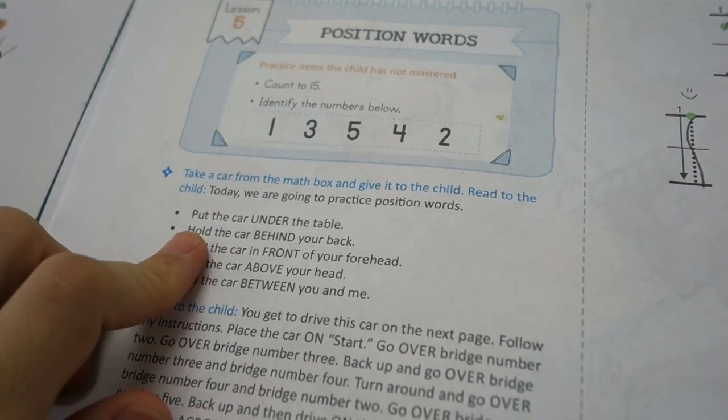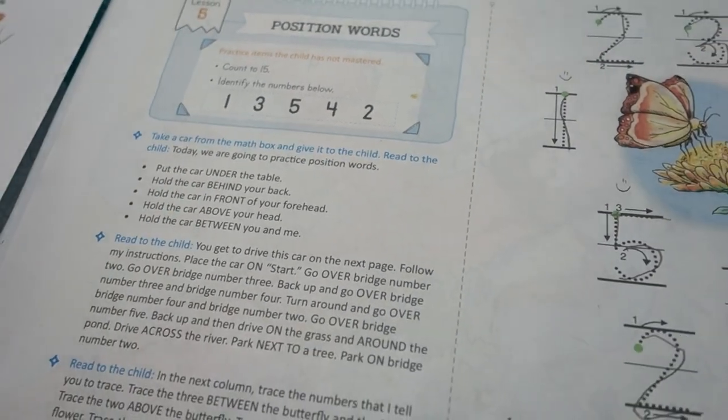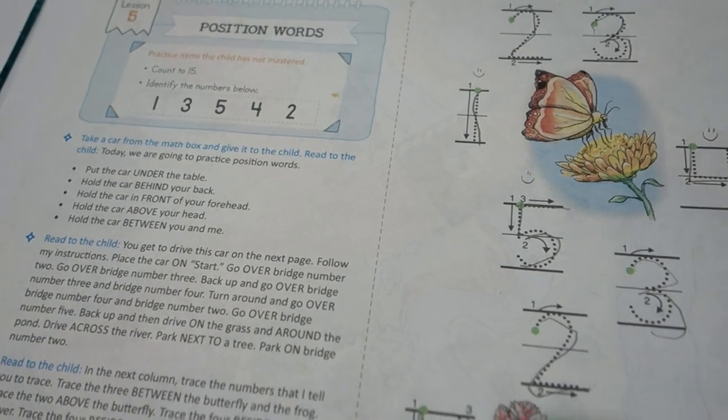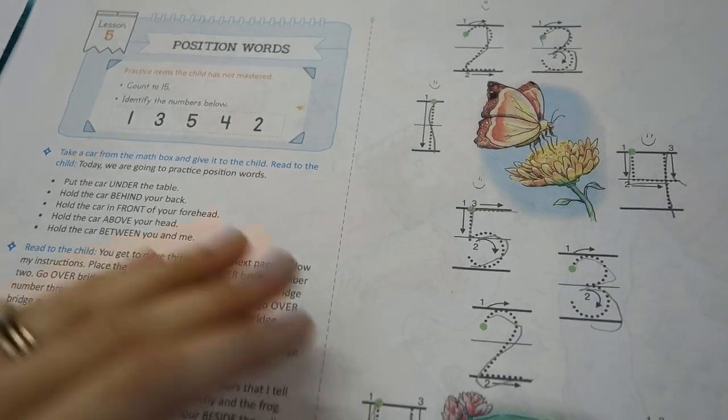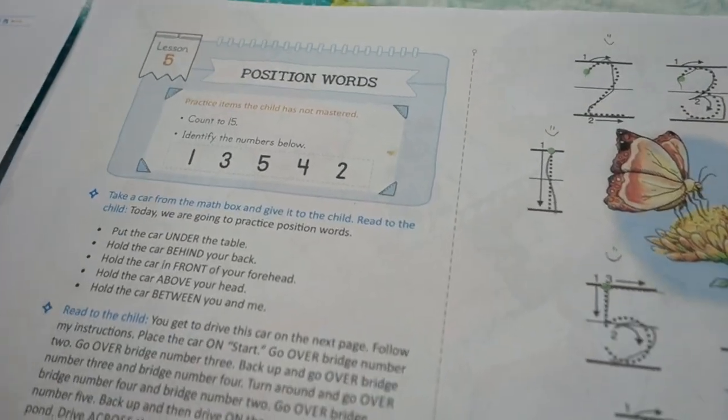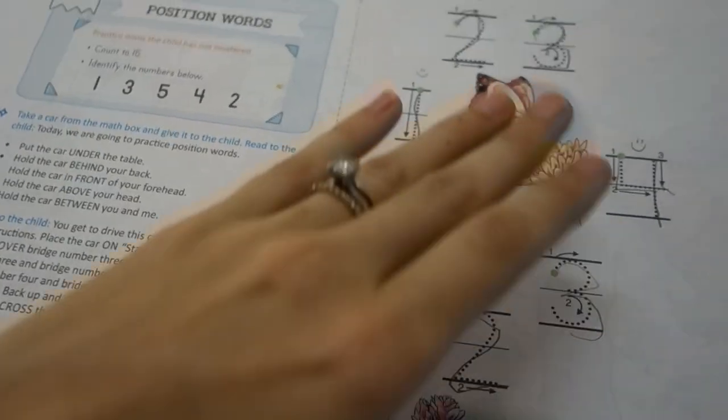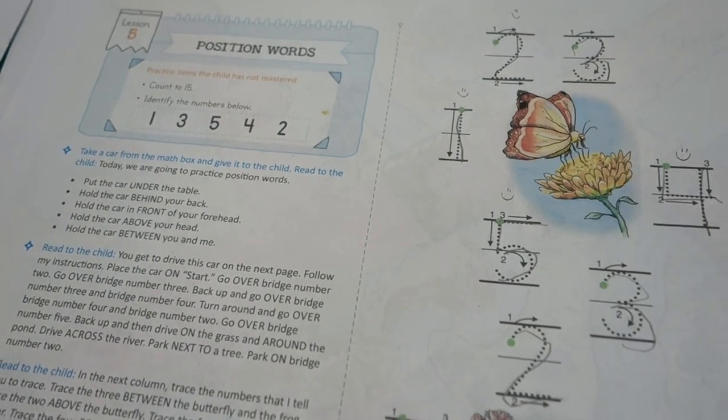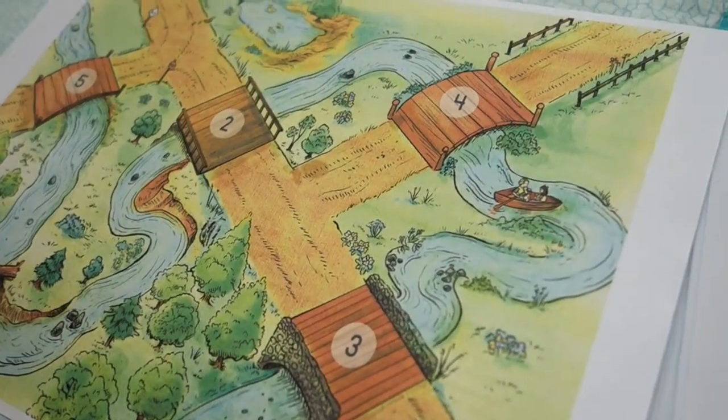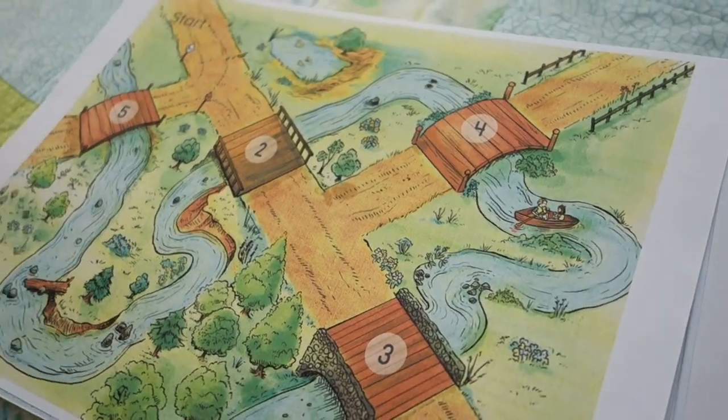But it's something that's coming up again and again within this program. Then in the next lesson, we are going into position words. Again, a great thing to learn about the positions. These are also, you know, prepositions, position words, under, behind, front, above, and finding these. But you can kind of see how it's going to a lot of different things in a relatively short time span.